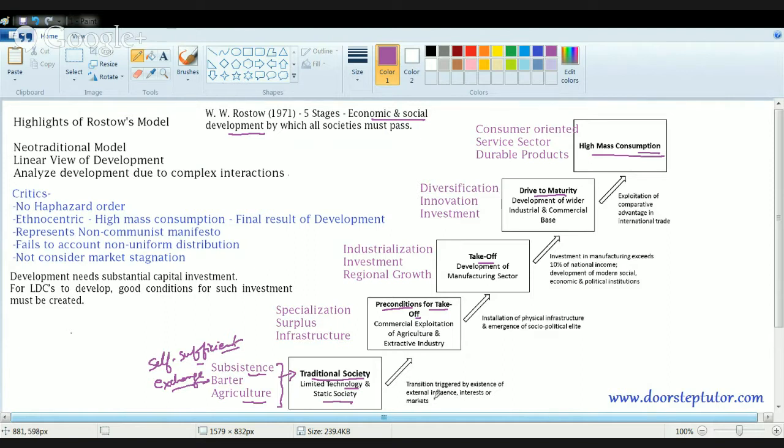Slowly and gradually, there was external influence and market effect coming in, which led to conditions for takeoff. Here what happened? Agriculture were commercially exploited. People started to develop agriculture on a commercial basis. They tried to produce more, specialize in certain kind of agriculture, develop farmhouses, try to develop surplus in agriculture so that they can export it. That was the thought of specializing and growing surplus in specific things. Then developing the infrastructure of the region. That led to installation of physical infrastructure and emergence of a socio-political elite group.